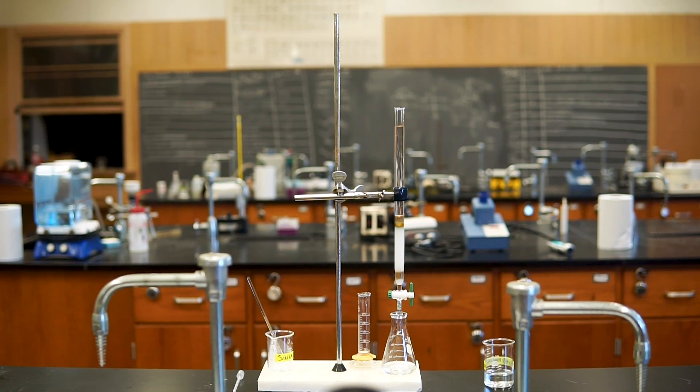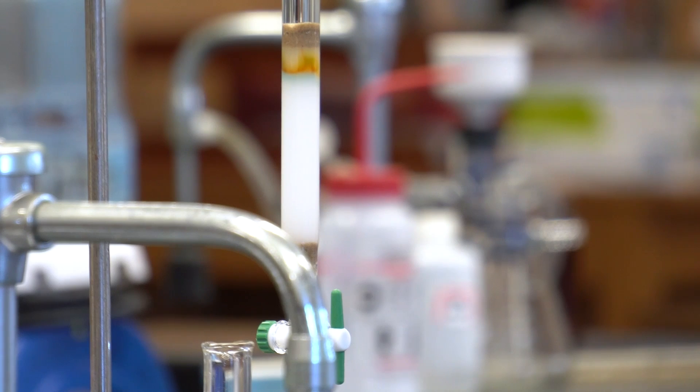When you open the stopcock the solvent level will start to go down. Remember that we can't let our column dry, so we have to add more solvent as the level goes down. We also want to be careful when adding more solvent, as we do not want to disturb the column. Add more before the level gets all the way down to the gel, and add carefully, letting it run down the sides. Continuing, we can see that our mixture is starting to separate into individual components.